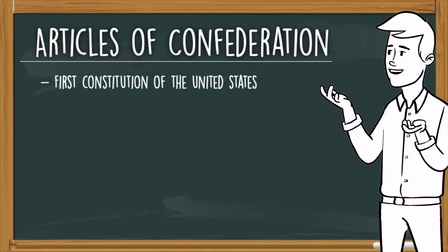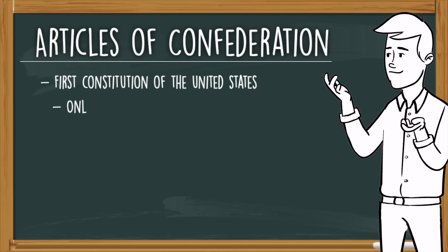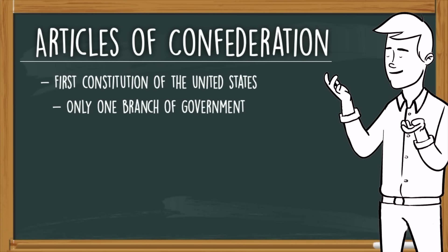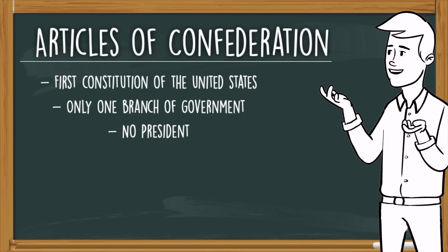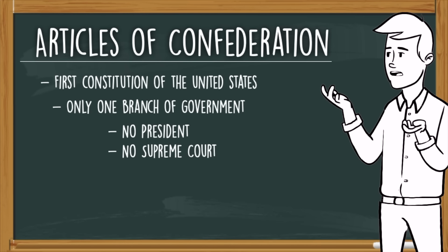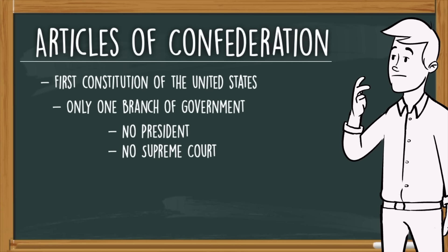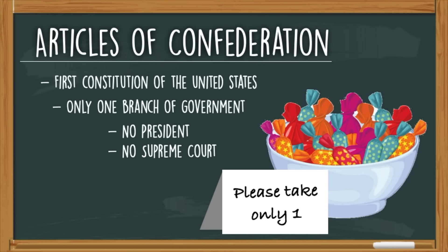This thing was a train wreck. Under the Articles of Confederation, we only had one branch of government, which was the legislative branch. That means no president and no Supreme Court. Let that sink in for a minute. Only a lawmaking body with no leader to enforce laws. That's like writing the rule 'take one' on a bowl of Halloween candy and just leaving it on your doorstep with no one to enforce the rule. We all know how that turns out.